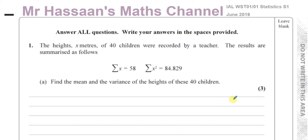Welcome back. This is Mr. Hassan's Maths Channel and I'm now answering question number one from the June 2019 Statistics S1 International A-Level and Excel exam. This question is asking us to find the mean and the variance of the heights of 40 children.